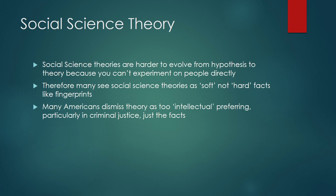As we close this up, remember that most criminal justice theories are social science, and they're harder. They're harder to develop from hypotheses because you can't physically experiment on people. So a lot of people see social science theories as soft, not hard. And many Americans dismiss theory as just intellectual, preferring the classic example of Joe Friday — just the facts. On that note, we'll close this lecture. We're going to keep them at five or six minutes each. I hope you enjoyed it.